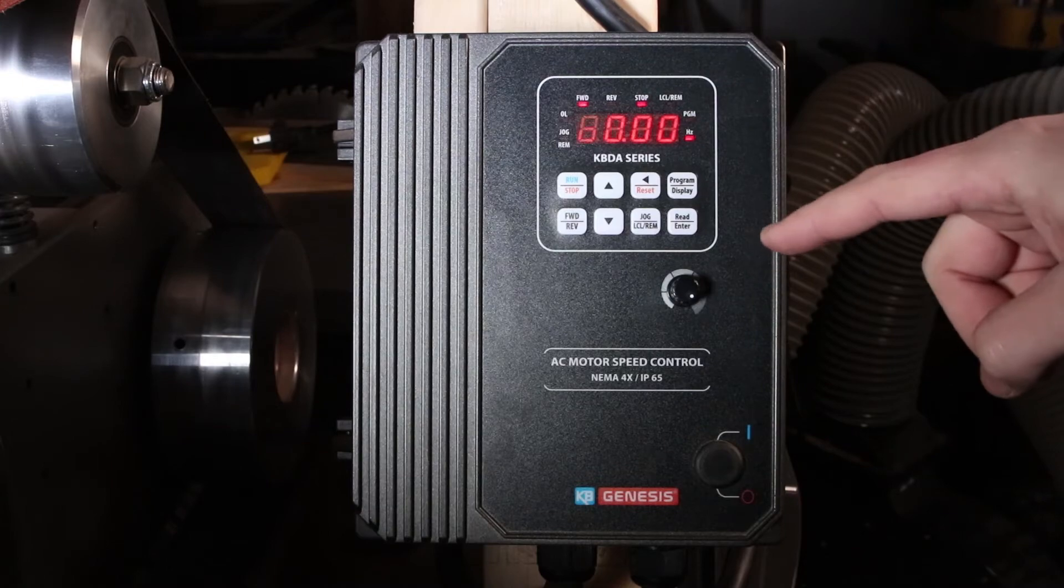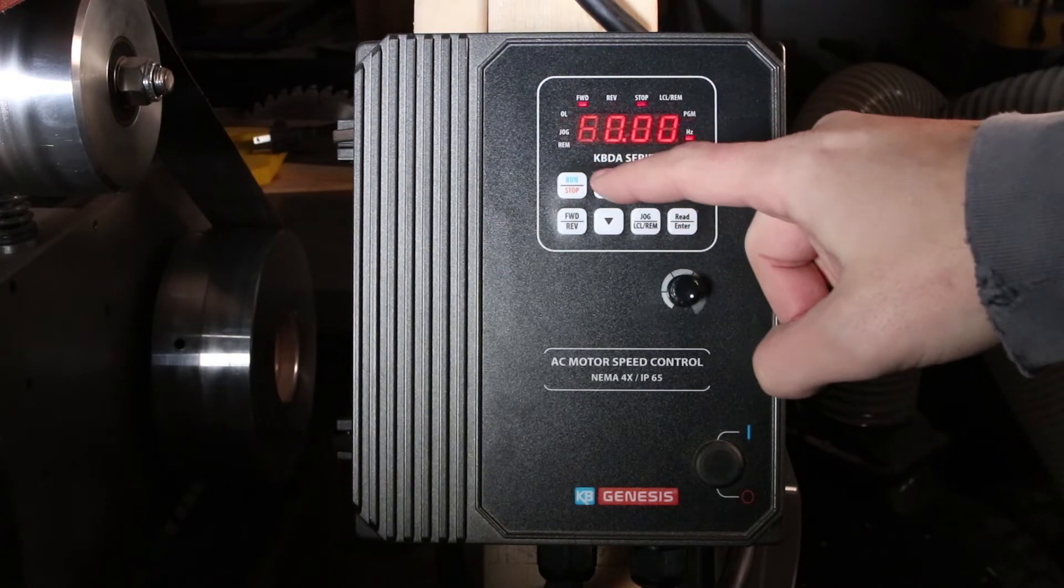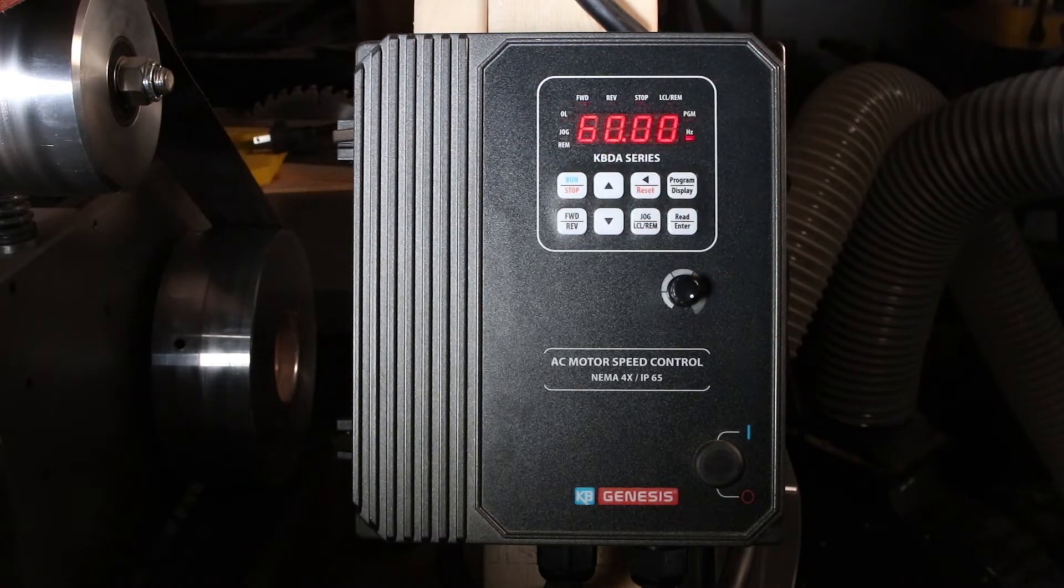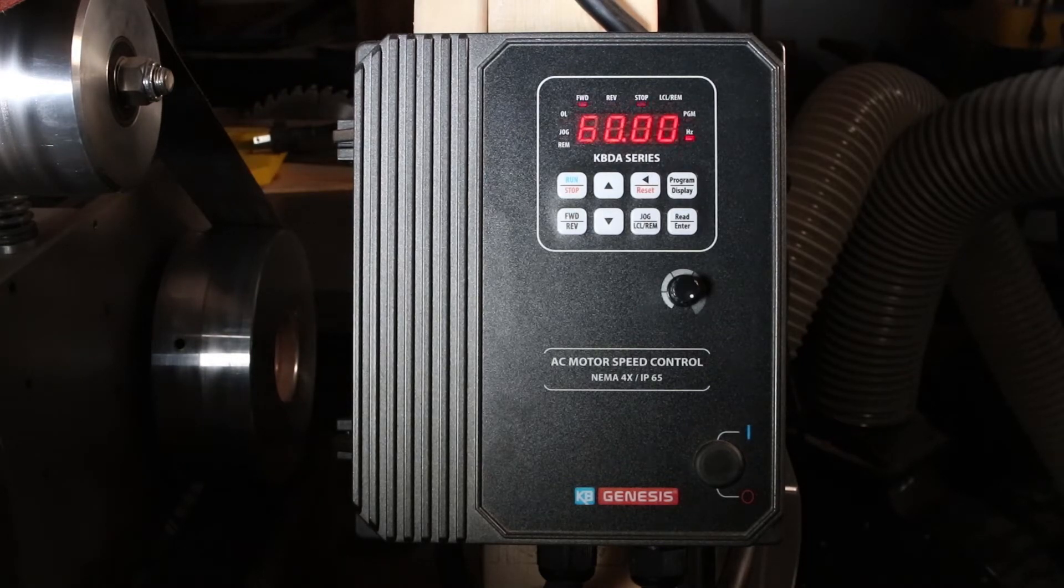You'll probably have to watch the other video and make sure you enable this. Otherwise, you're going to have to do it using the buttons. Now we know that this is the maximum, 60 hertz. And we know, because we calculated before, that the maximum surface feet per minute, when it's running at full speed, is 47.10.